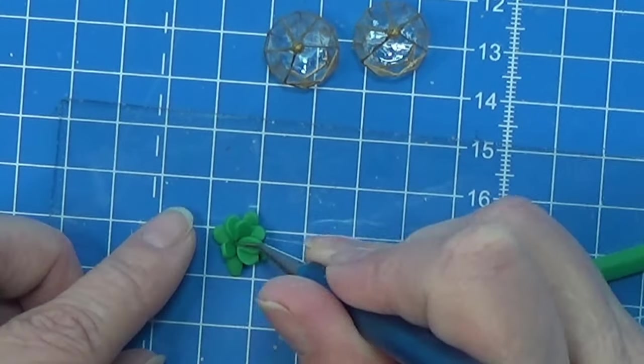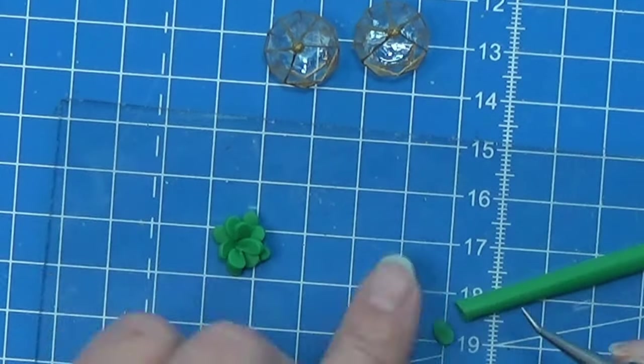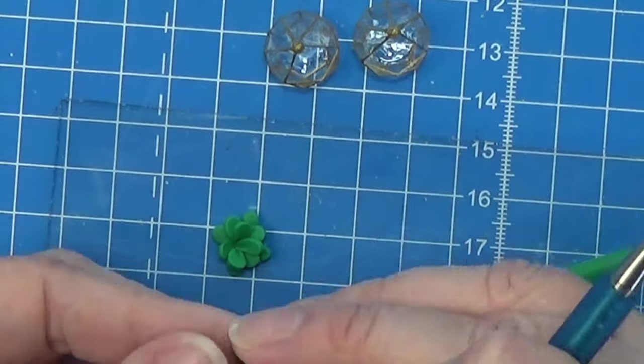With this one I am kind of just flattening out the cutout from the cane and just placing them in the flower.